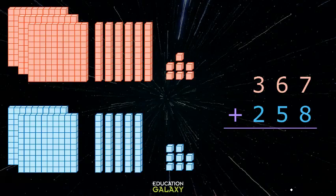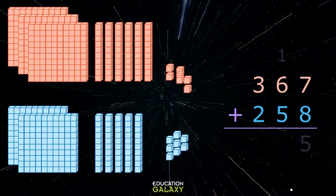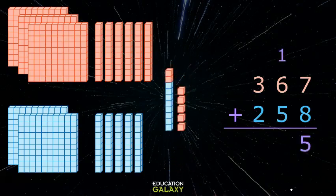However, we cannot just write 15 in the ones place. It doesn't work. What we really have is a 10 and 5 ones. So we give the 10 to the neighbors, and we leave the 5 ones.